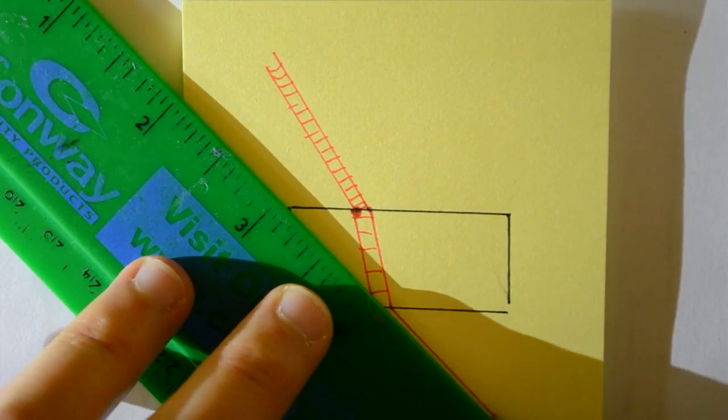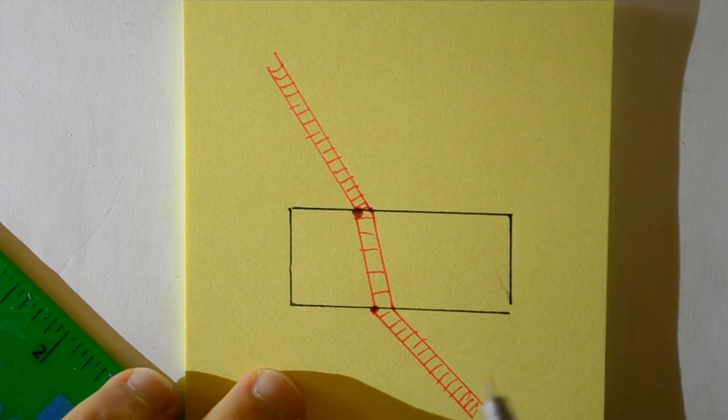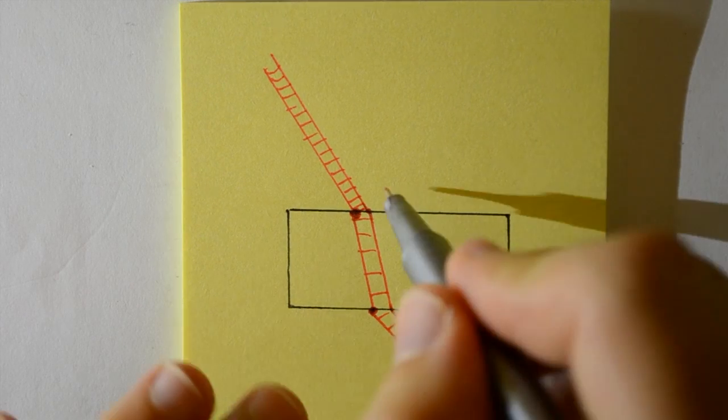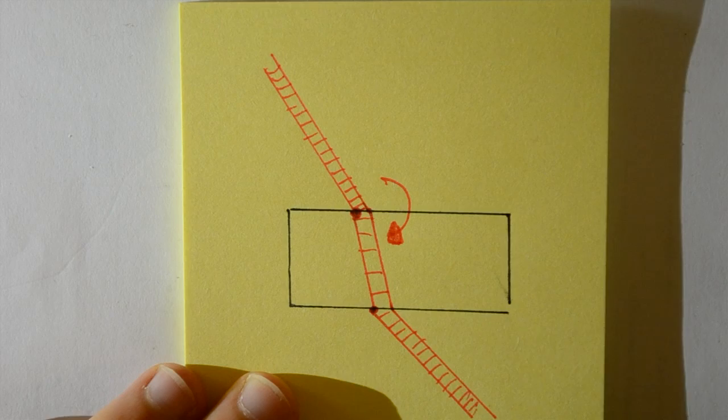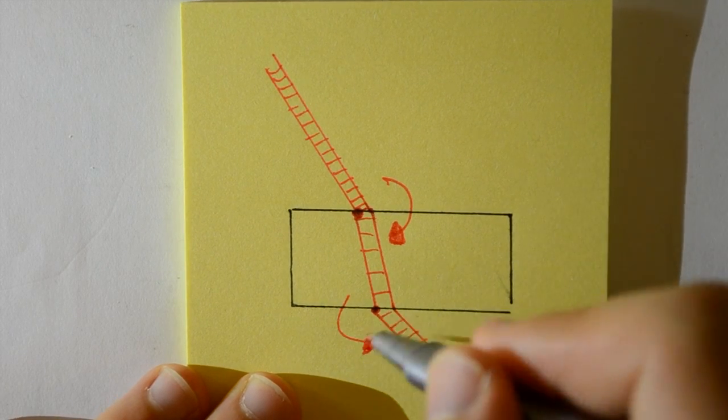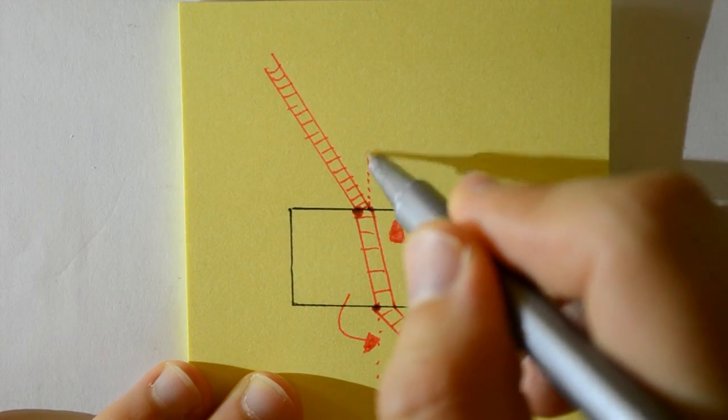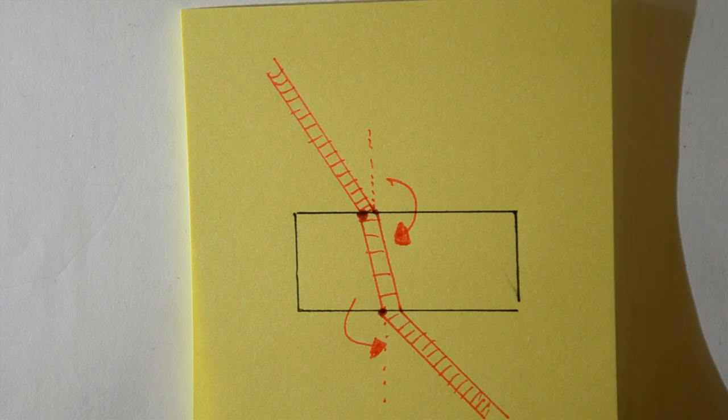And then it reaches the outside and the opposite happens. It moves faster and bends back again. You can use this analogy to remember that when light travels into a denser material, it travels towards the normal. And when it travels into a less dense material, it travels away from the normal.